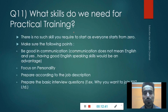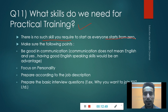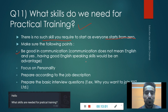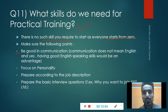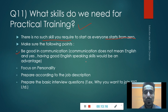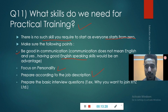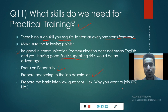What skills do you need for practical training? There is no specific skill required to start, as everyone starts from zero. Make sure of the following points: be good in communication — communication doesn't mean only English, though having good English speaking skills is an advantage. Most people misunderstand communication skills as just English speaking; if you can convey your message to another person, that is communication, whether in Hindi or English. Also focus on personality, prepare according to the job description, and prepare basic interview questions, which you can easily find on Google.